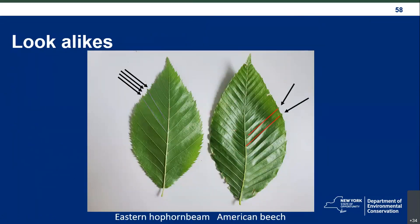Here are two ovate leaves for comparison. On the left we have eastern hop hornbeam and on the right we have American beech. Each arrow points to a tooth and each line is a vein. With eastern hop hornbeam, there are four teeth between two veins — not every tooth is associated with a vein. On American beech, each vein ends exactly in one tooth; it's a very distinct relationship. The only other lookalike with a similar one-vein-one-tooth pattern is the American chestnut, but those leaves are more elongate rather than oval.